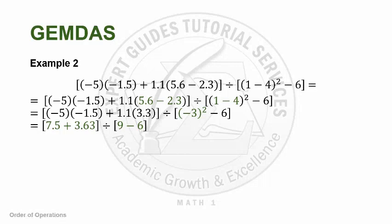Lastly, only addition-subtraction remains. Obviously, in the first bracket, you just have to add. In the second bracket, you just have to subtract. That gives us 11.13 divided by 3, giving us a final answer of 3.71.